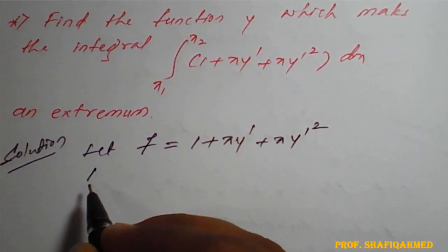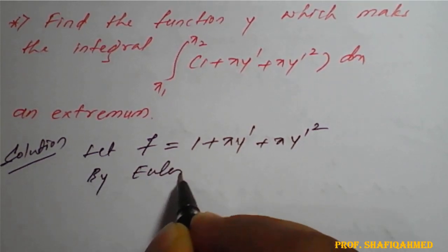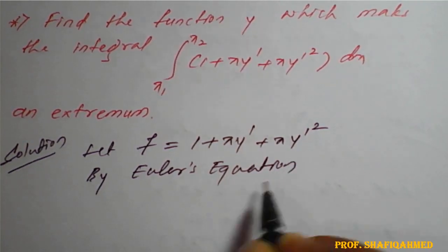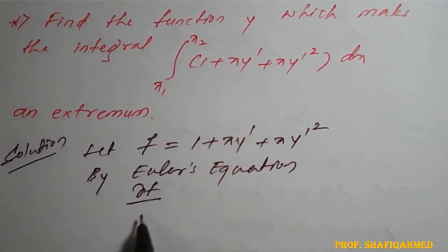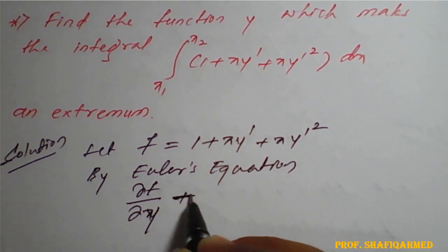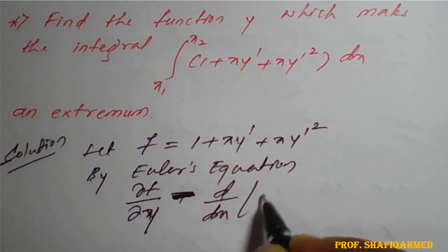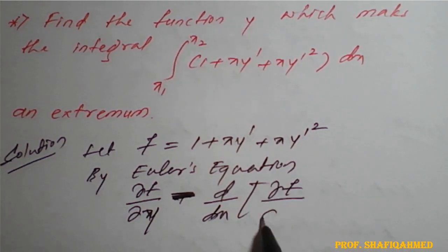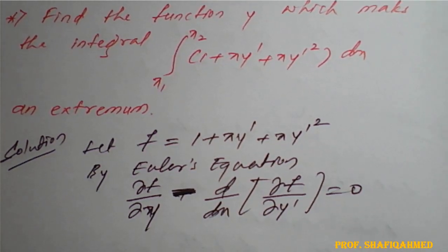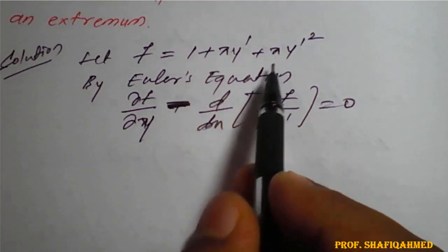By Euler's equation, what is Euler's equation here? So dou f by dou y minus d by dx of dou f by dou y dash equal to 0. This is Euler's equation. In this f, we will apply the given function.